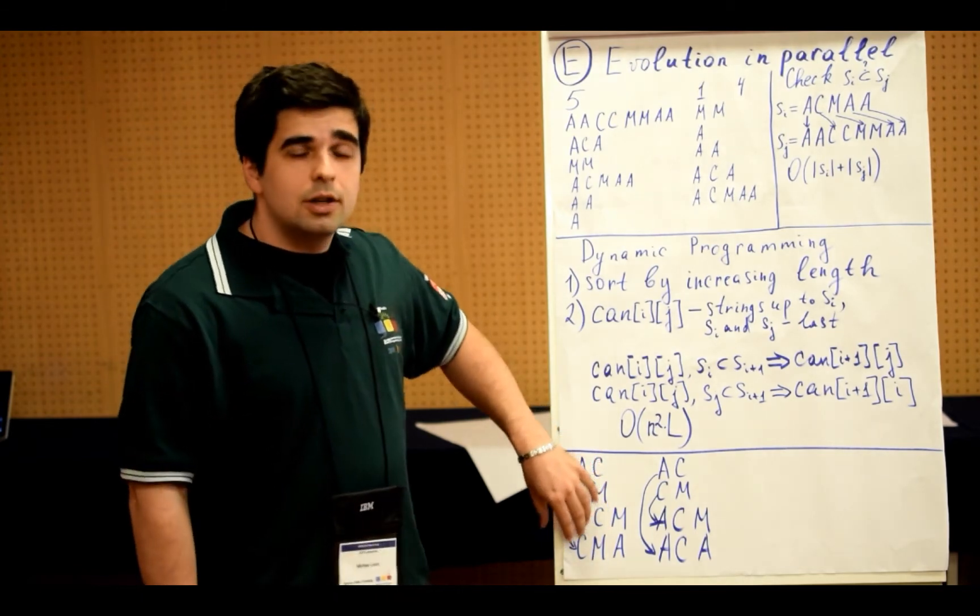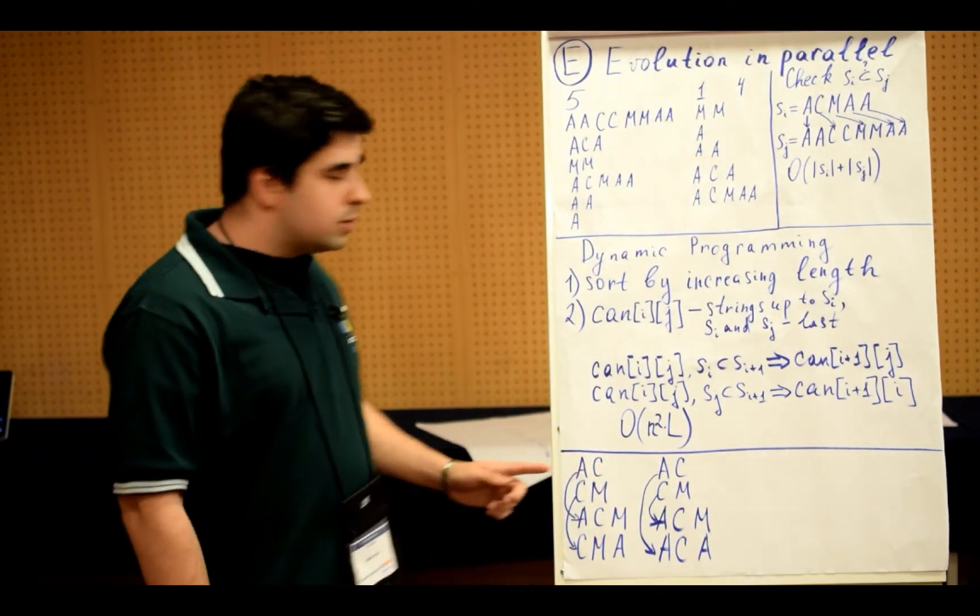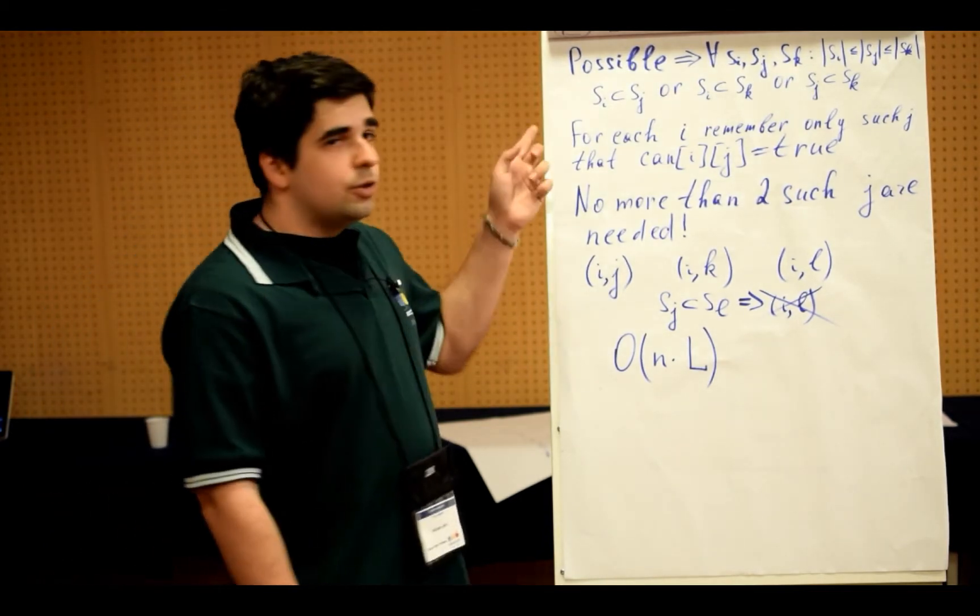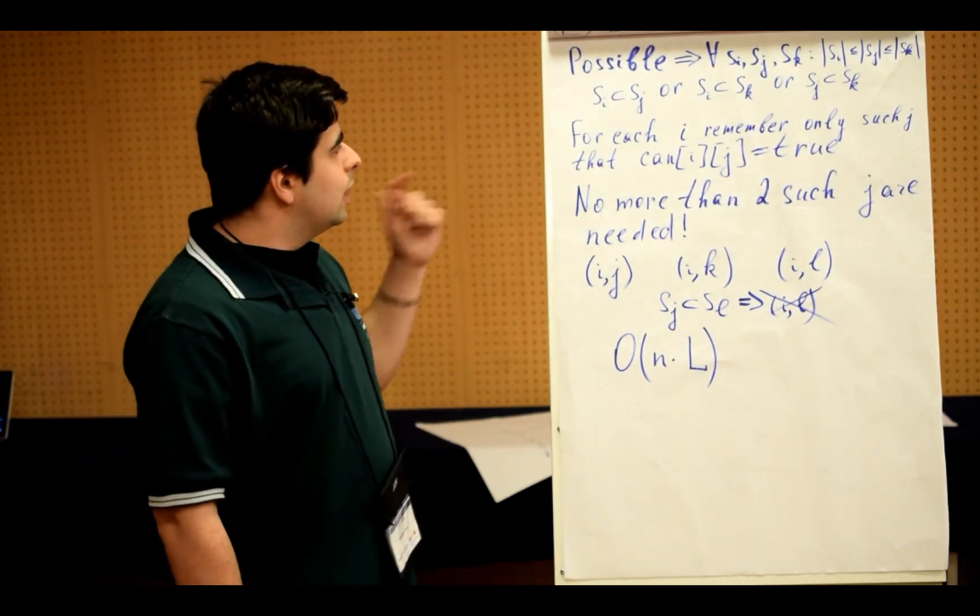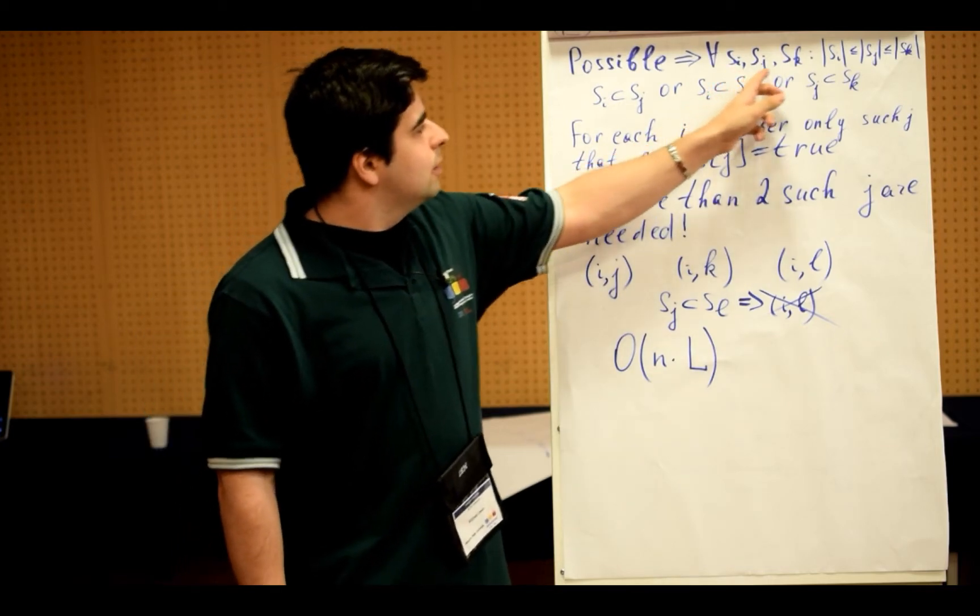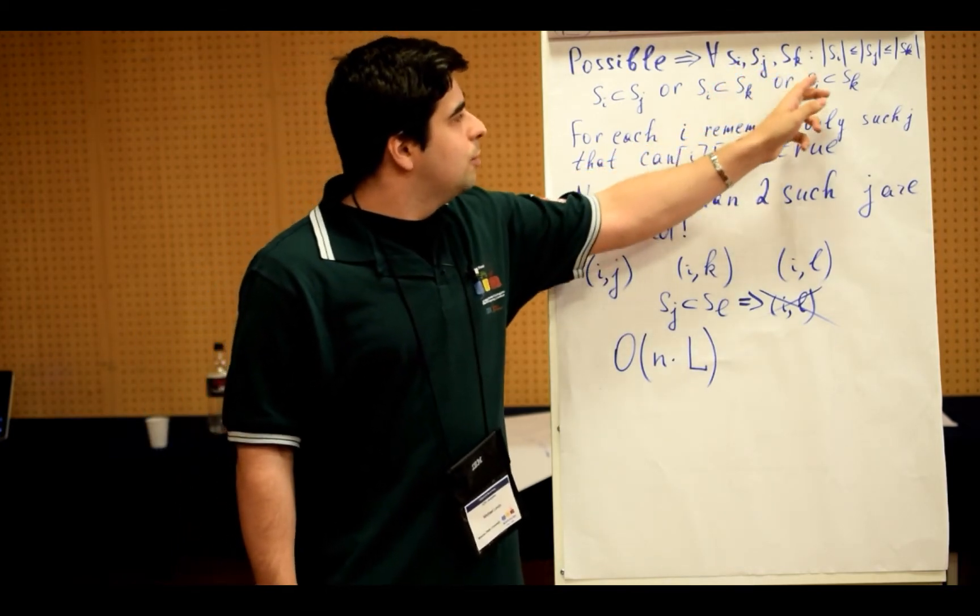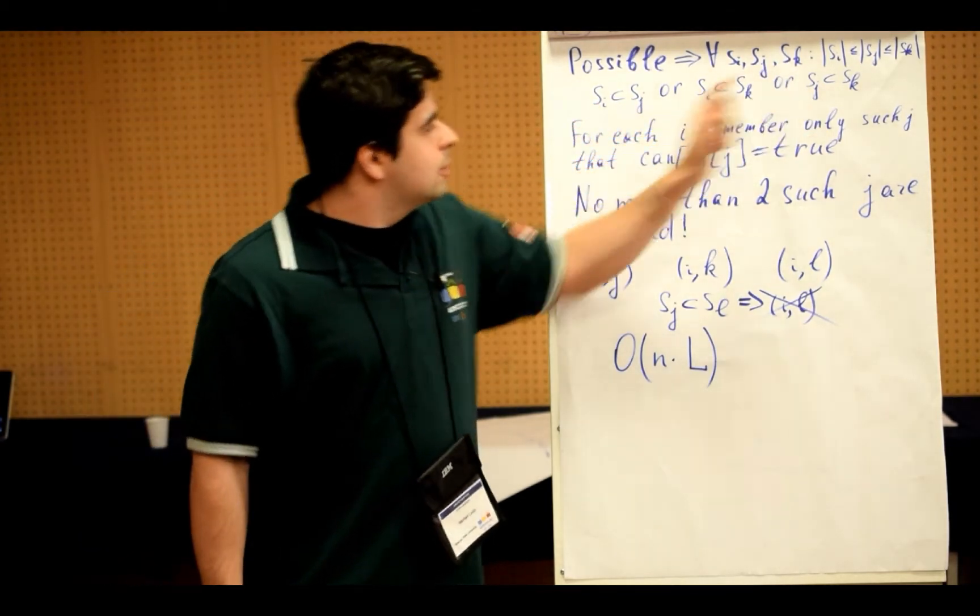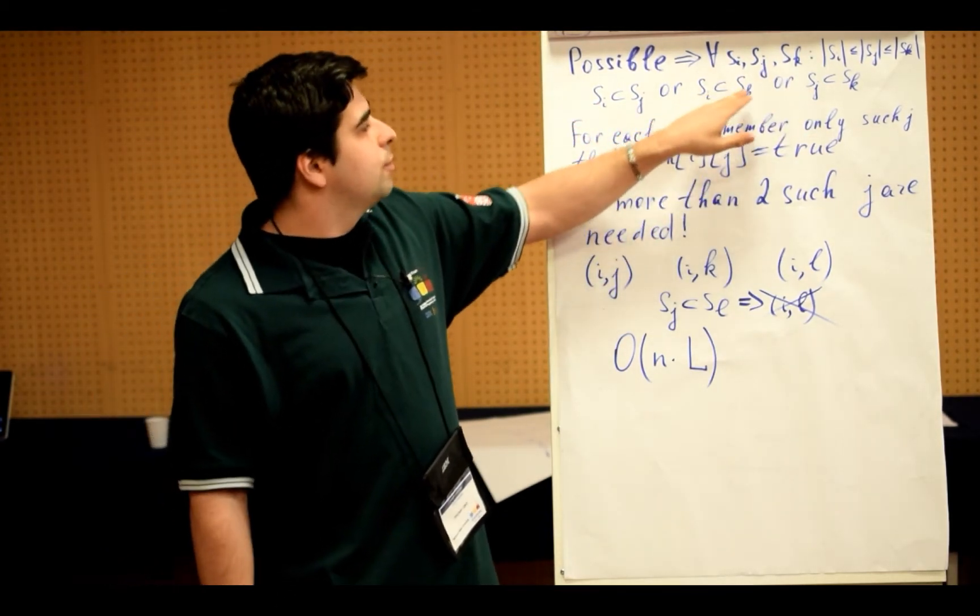So what is the correct solution? We'll see that on the next slide. So, if this solution is even possible, then we can say that for any three strings, SI and J and SK, which are sorted by length, at least one of these pairs is a pair of strings where one is a subsequence of another one.